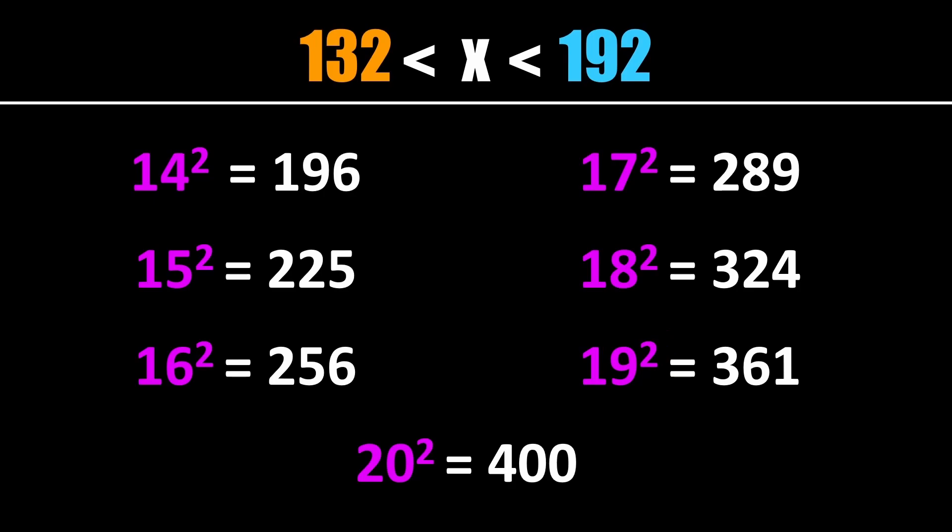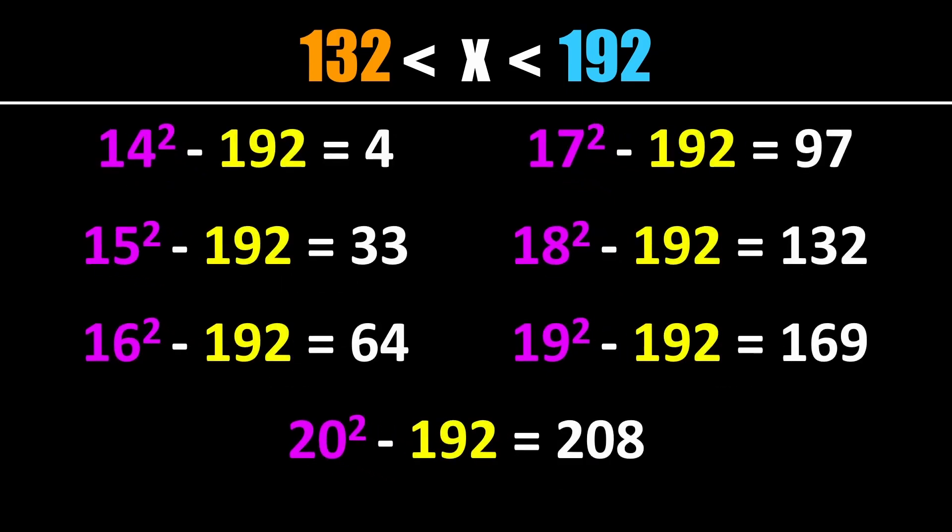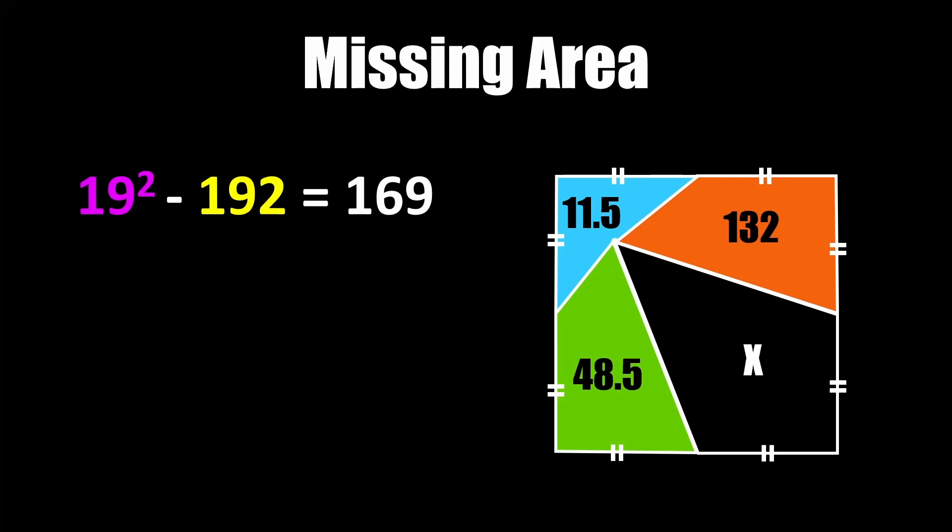And so with those constraints in mind here are the perfect squares for the values of s between 14 and 20. And here's what they become when we subtract 192 from them. If you notice there's only one result that is both less than 192 and greater than 132. And what that means is that the missing area of our square is 169.